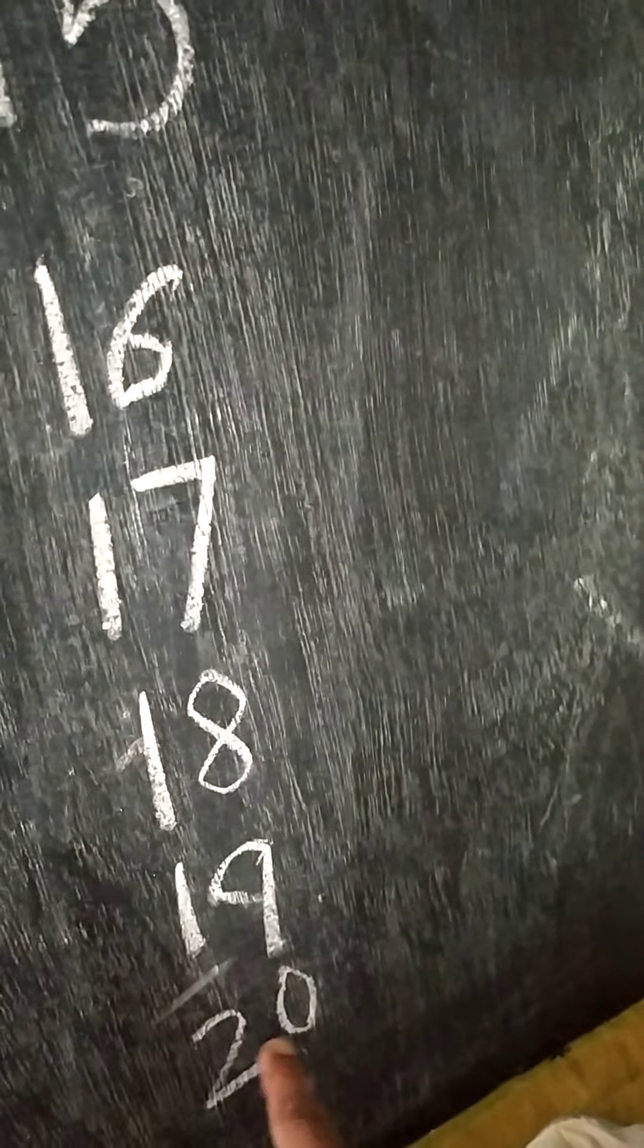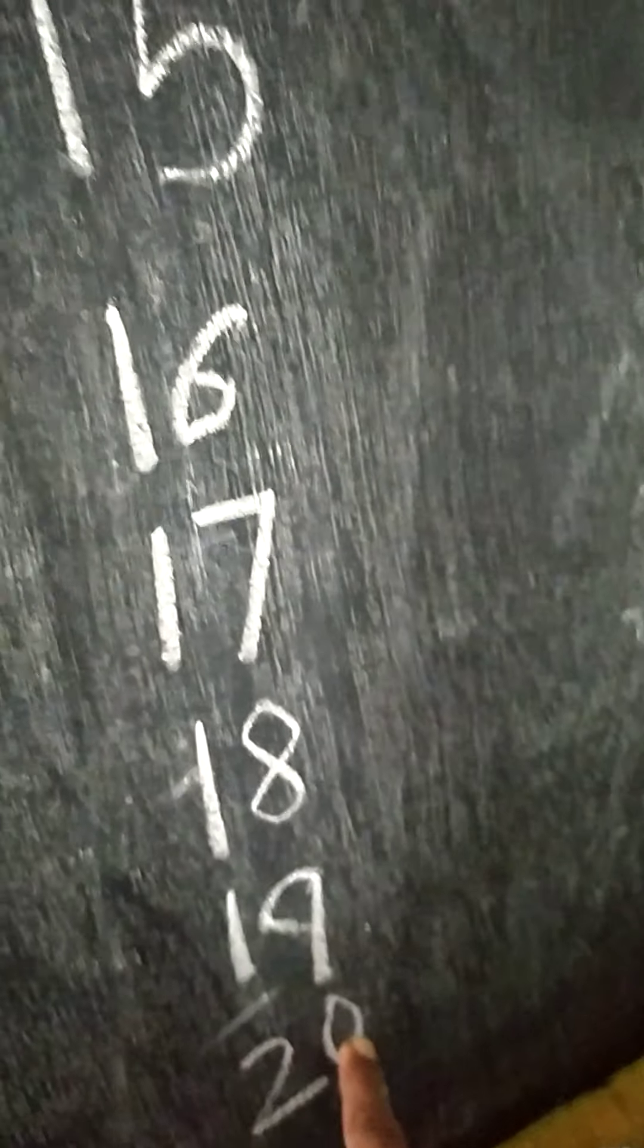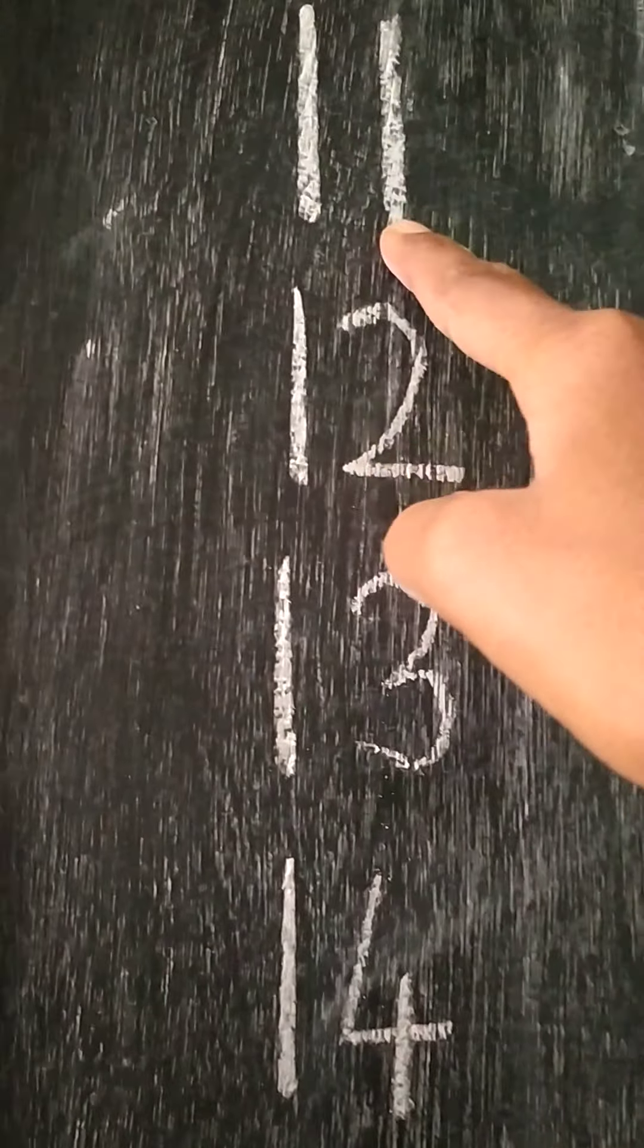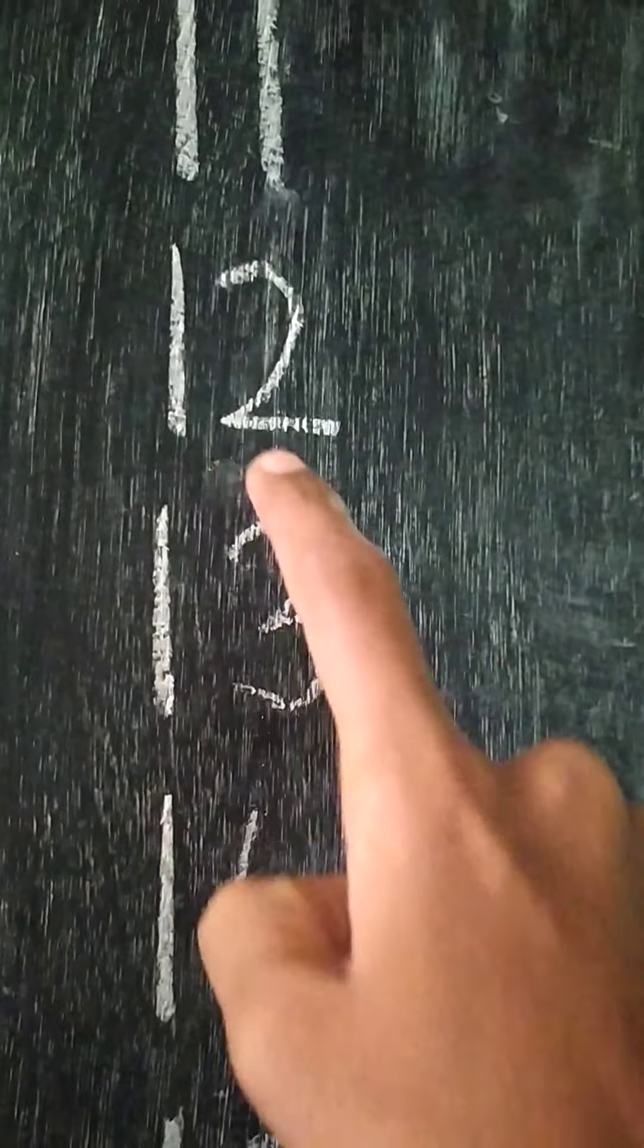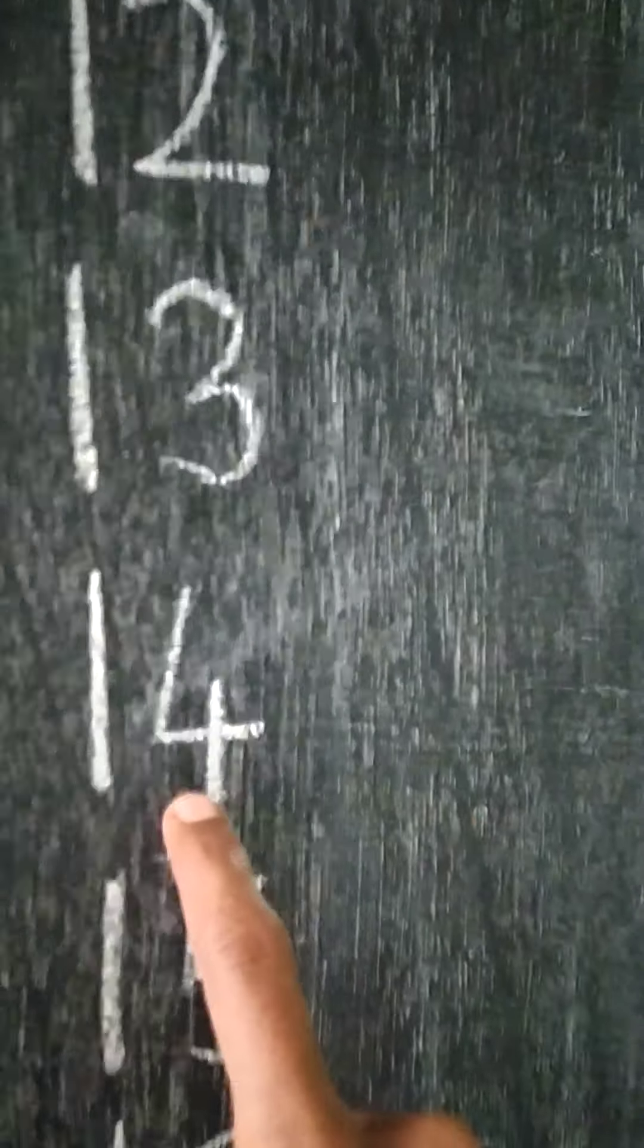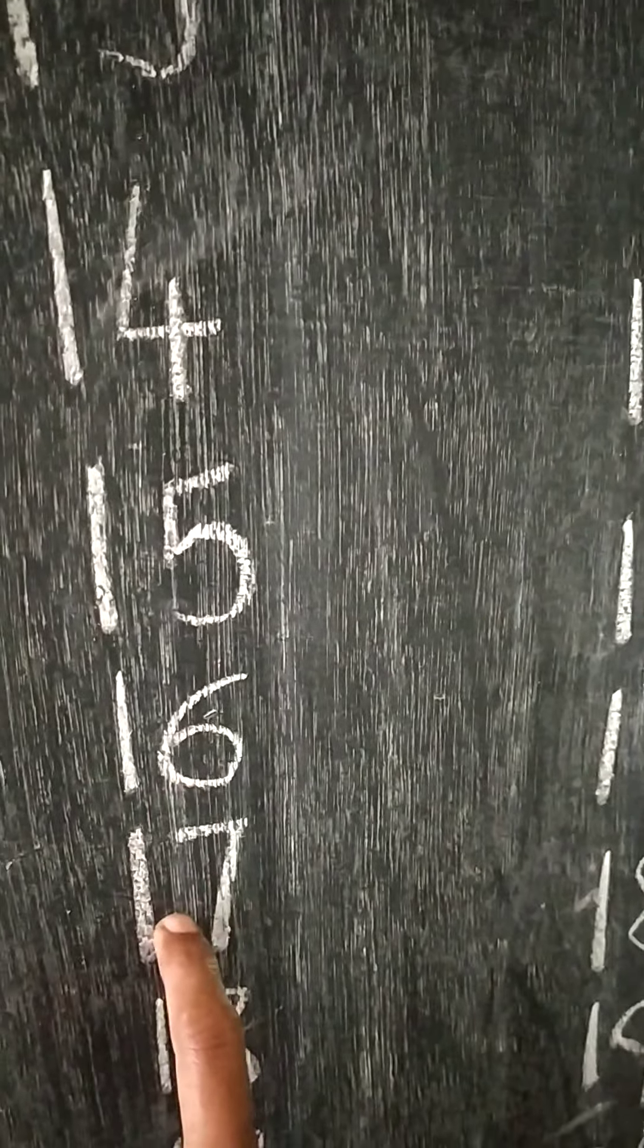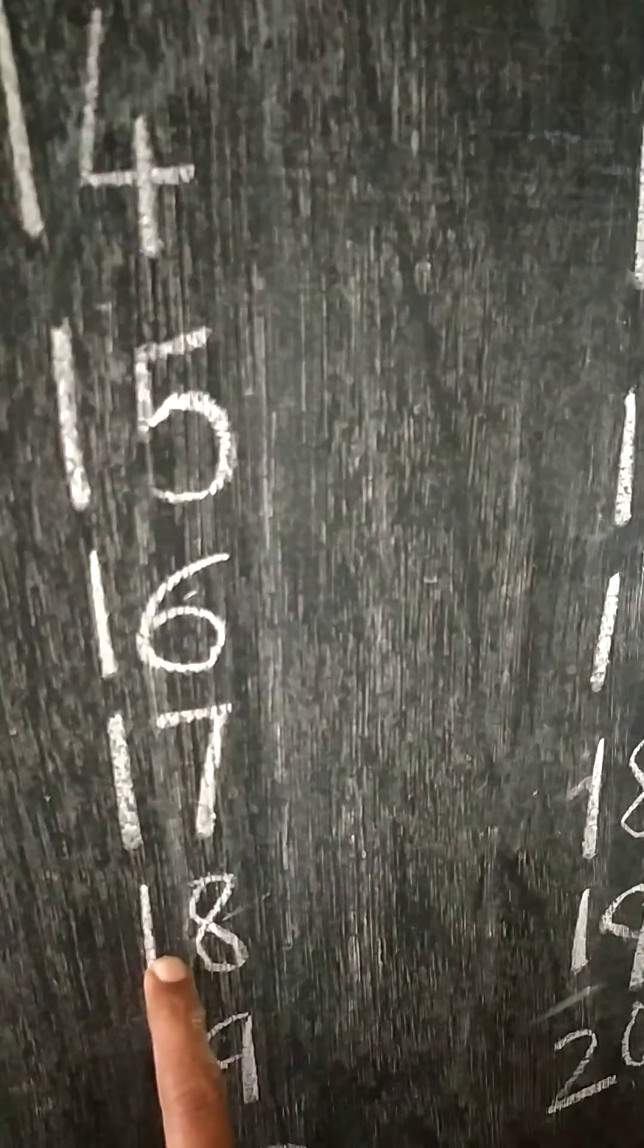2, 0, 20. Try to write like this and say like this: 11, 12, 13, 14, 15, 16, 17, 18.